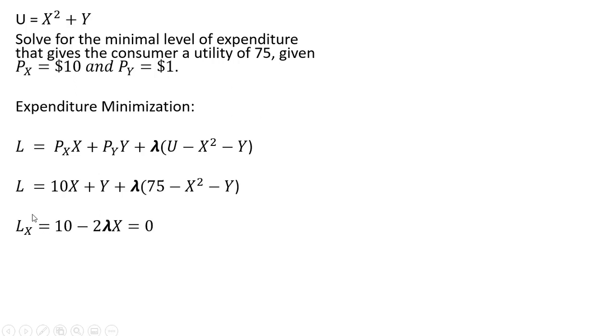I'm going to take the partial derivative of the Lagrangian with respect to x. The partial derivative of 10x is 10, and then the partial derivative of lambda multiplied by minus x squared is minus 2 lambda x. We set that equal to 0.